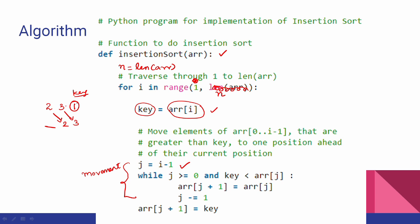When we move, array of j+1 equals array of j. j decrement. Finally, the empty space is created and we insert the key element into array of j+1. If you are able to trace the logic, the algorithm is clear.